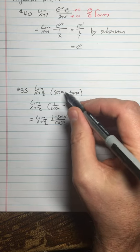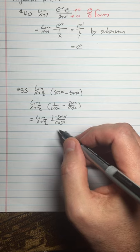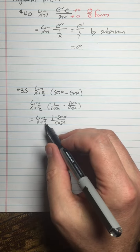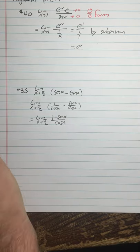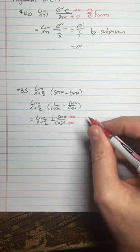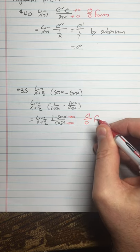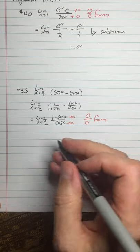Now I've turned what looked like a difference into actually a quotient. Now let's think about what kind of form it is. Sine of pi over 2 is 1. 1 minus 1 is 0. So that means my numerator is approaching 0. And cosine of pi over 2 is 0. So it's a 0 over 0 form. How about that?